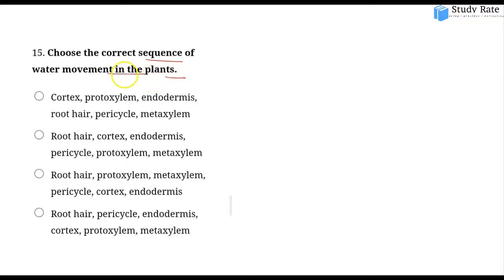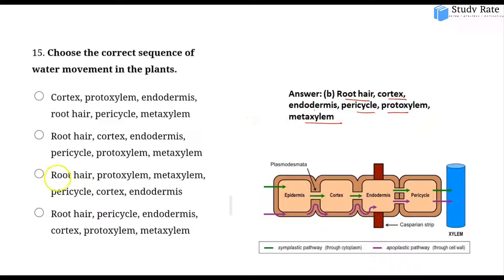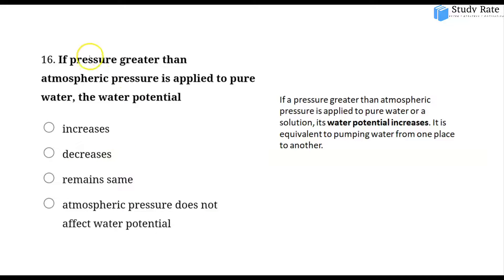The thirteenth question: Choose the correct sequence of water movement in plants. The correct sequence is: root hair absorb water first, then cortex, then endodermis, then pericycle, then protoxylem, then metaxylem. This is the correct sequence: root hair → cortex → endodermis → pericycle → protoxylem → metaxylem.